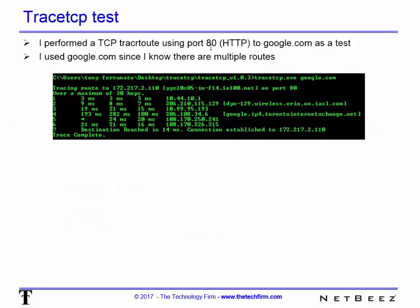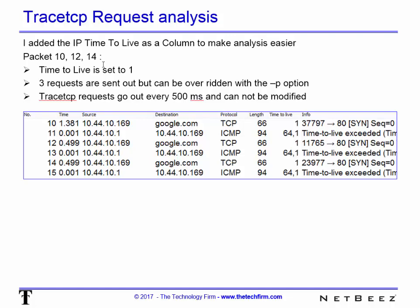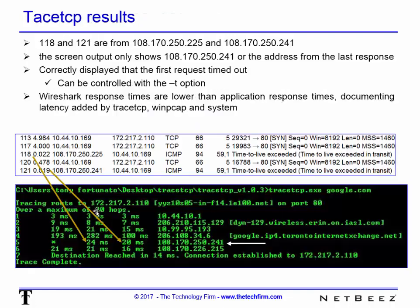I performed a simple test — I used port 80 to get to google.com. It's kind of cool because I know Google has multiple routes, so I wanted to see what it would do. You can see it worked just fine; it gives me all the times and such. This is also important because sometimes ICMP gets routed differently, so TCP port 80 would give you the true route. In packets 10, 12, and 14, the time to live is set to 1. I added a TTL column in Wireshark and you can see three requests go out. You can also override that using a dash P option in TraceTCP. The requests go out every 500 milliseconds or so and that cannot be modified.